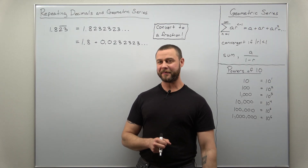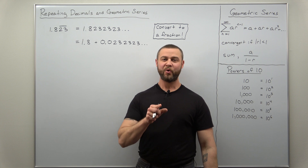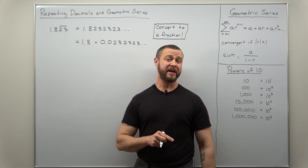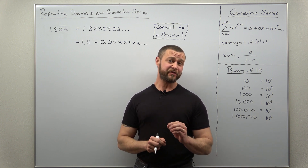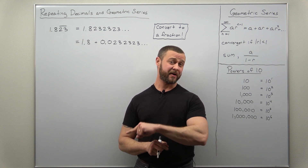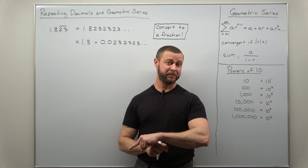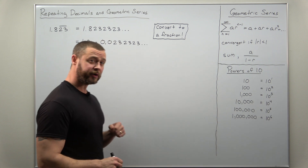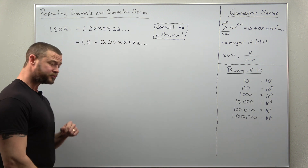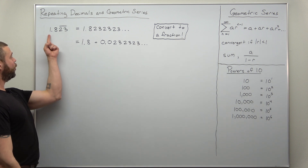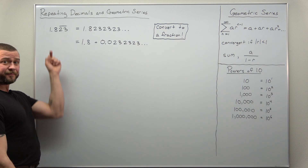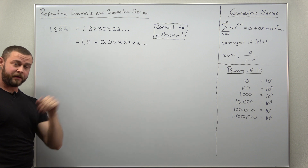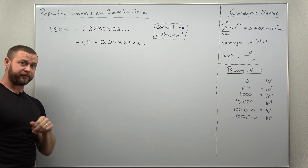Greetings fellow mathematicians. We're going to take a look at another example of using a geometric series to convert a repeating decimal into a fraction. The problem we're going to look at is the repeating decimal 1.8, and then it's the digits 2, 3 that repeat forever.